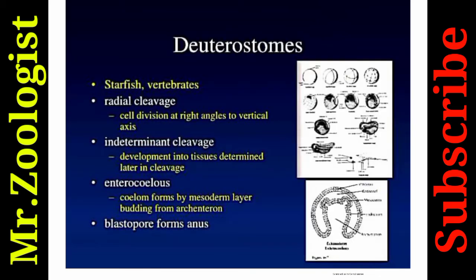Deuterostomes — examples include starfish and vertebrates — undergo radial cleavage, where cell division occurs at right angles to the vertical axis. They show indeterminate cleavage, meaning no predetermined cell fate. The coelom forms by mesoderm layer budding from the archenteron, called enterocoelous formation. The blastopore forms the anus in deuterostomes.